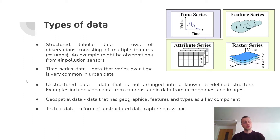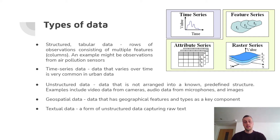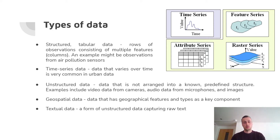We get a lot of unstructured data from videos, audio, and images captured throughout urban environments. Geospatial data is a very important type for urban analytics — data with geographical features such as points, polygons, and lines, which are vector data formats. In an urban setting you want to model where things are and how close they are to other things, and geospatial data is how you do that. Finally, textual data — captured in raw text — is unstructured data on which you can do different types of analysis.